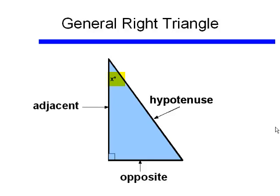So the opposite and the adjacent side depend on which angle we're looking at, which acute angle we're looking at. The hypotenuse, as I said, is always the same—it's always the longest side, and it's always the one opposite the 90 degree angle.